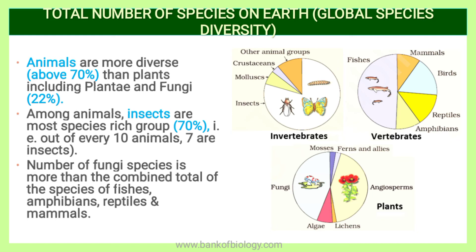Plants account for about 22% of described species. Among animals, insects are the most species-rich group, constituting about 70% of the total animals — out of every 10 animals, 7 are insects. The number of fungi species is more than the combined total of fishes, amphibians, reptiles and mammals, meaning fungi are very abundant in number. You can see in the graph that invertebrates and vertebrates have a small proportion compared to fungi.